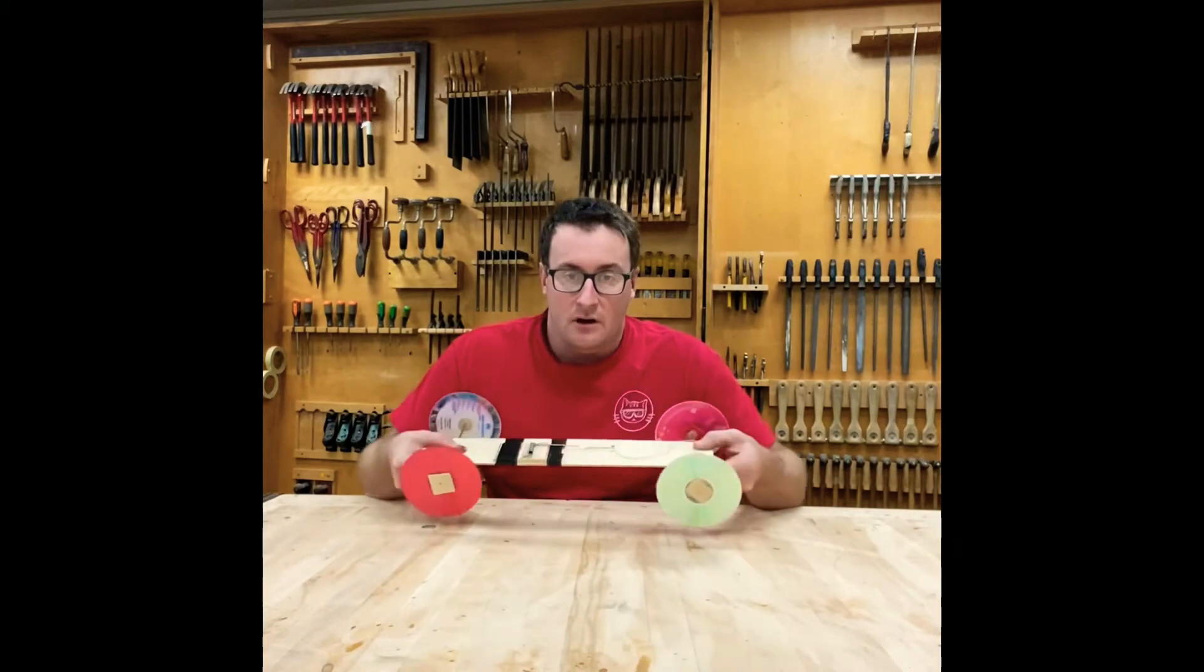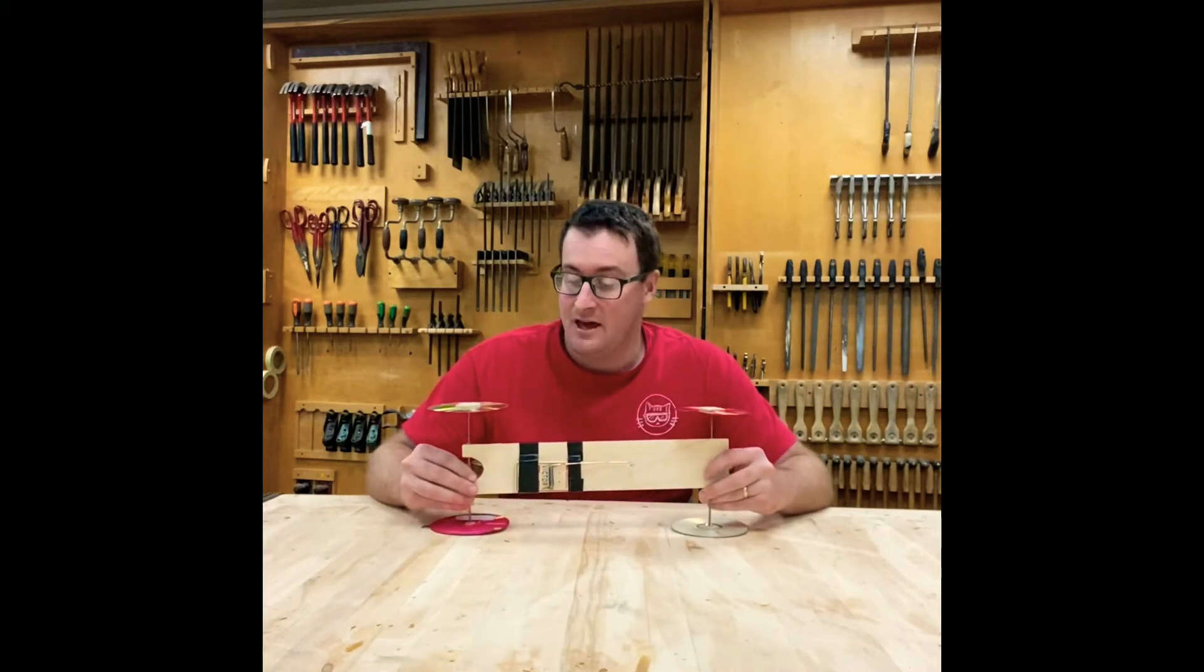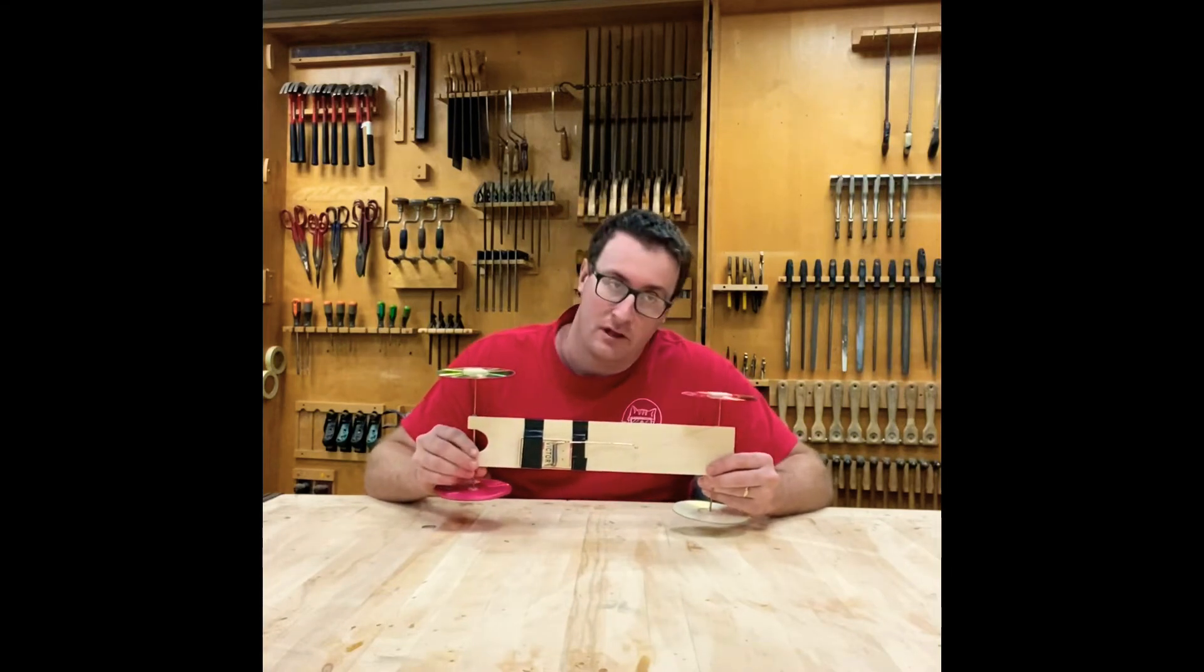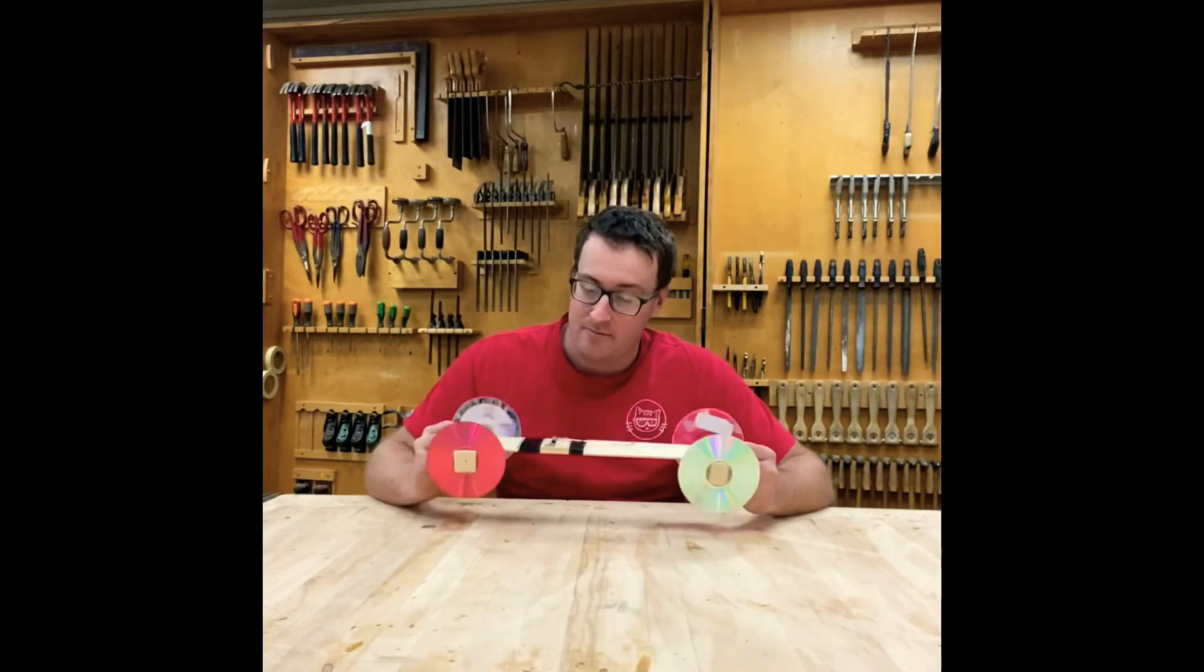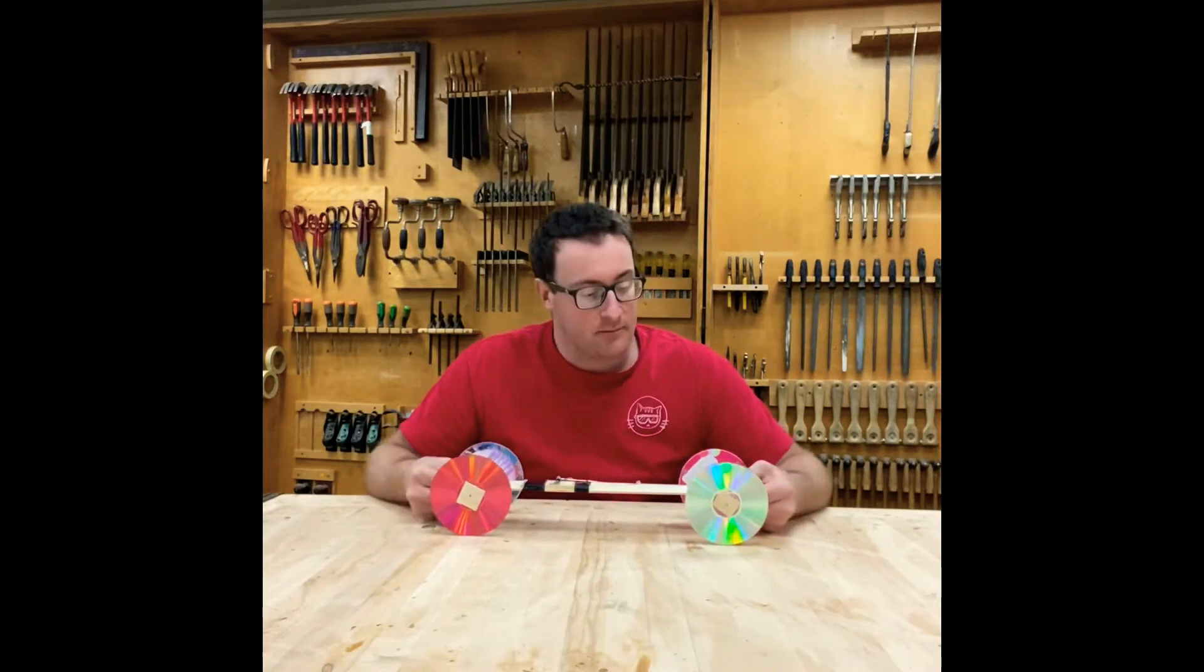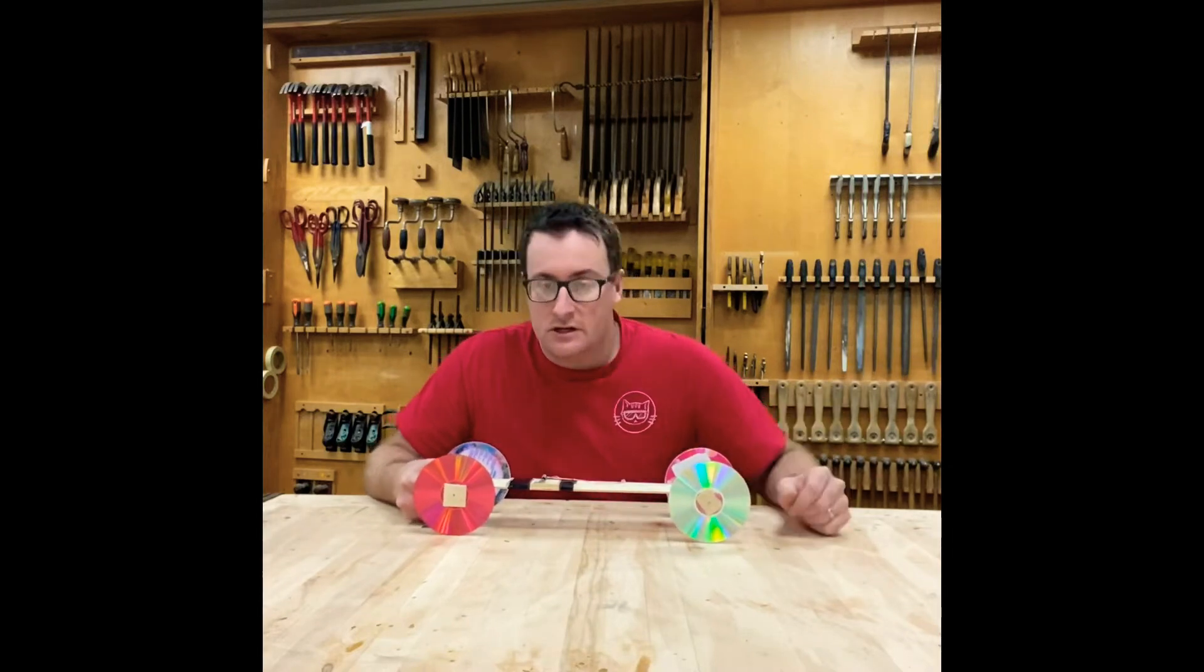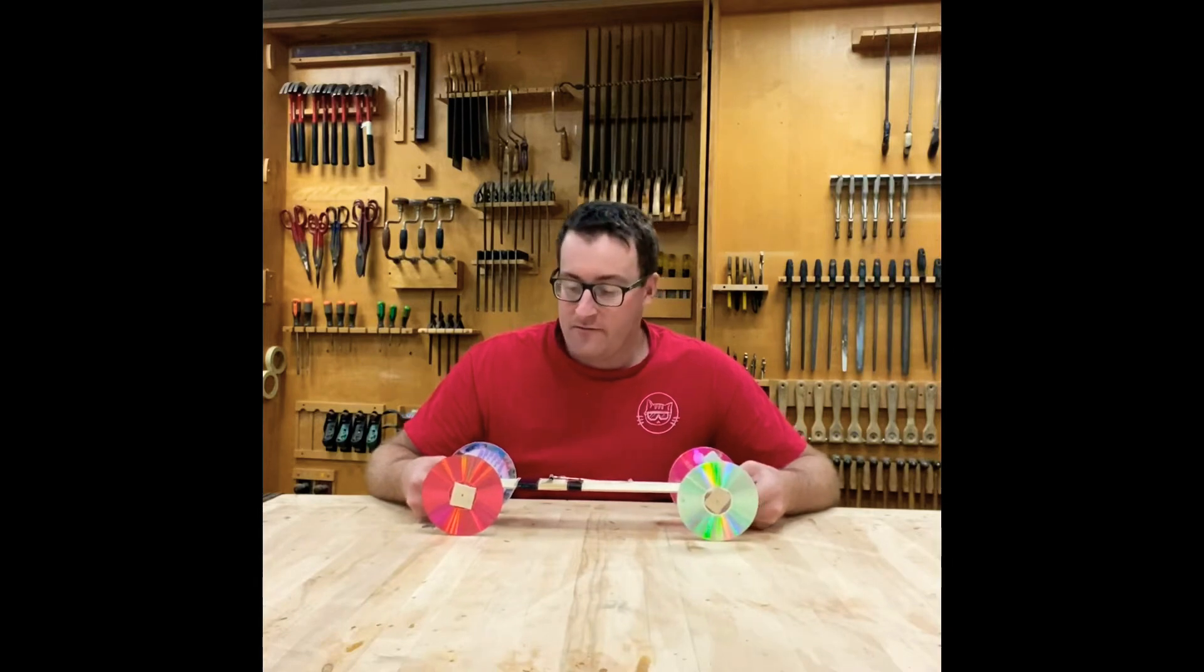This one as is, it went 10 meters, which is about 33 feet, in 8.6 seconds. So not too bad for a basic mousetrap car. 10 meters in 8.6 seconds, and then it kept coasting and it coasted about another 10 meters before it stopped. So it went about 60 feet total.